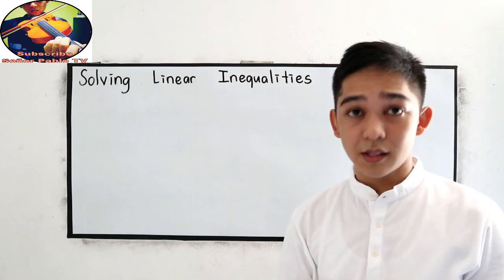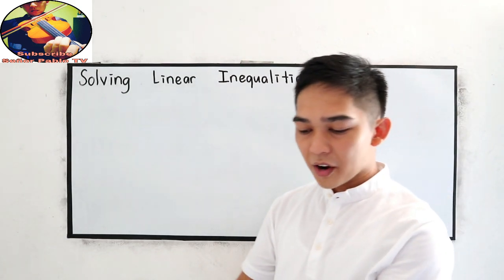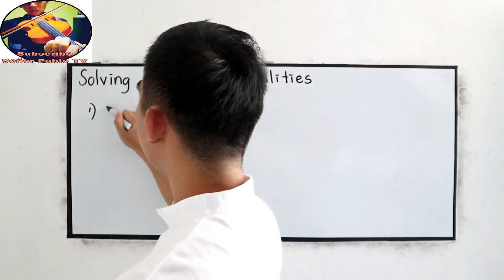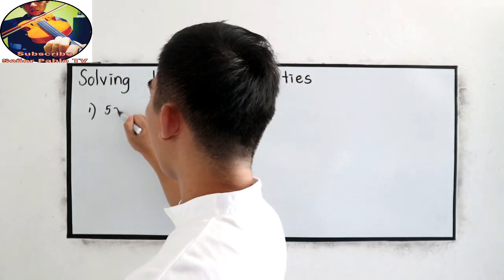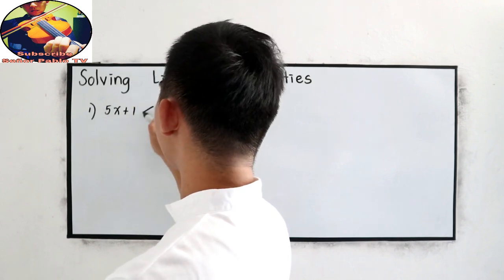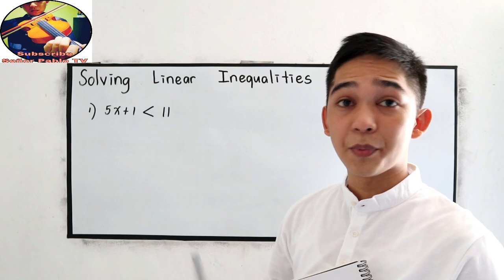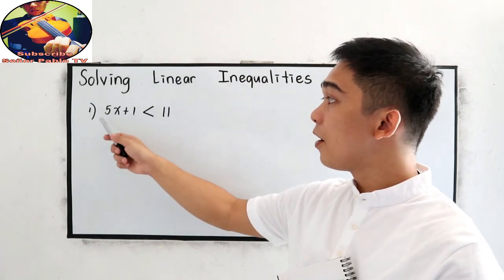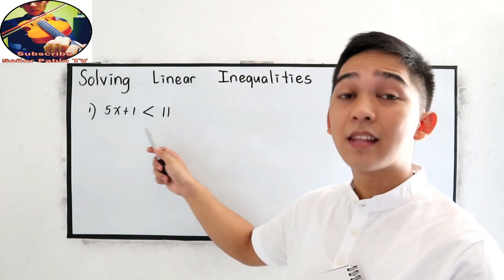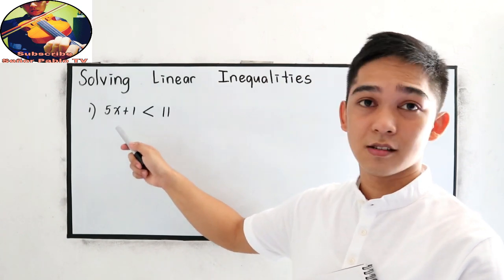Let's try to solve number 1: 5x plus 1 is less than 11. Again, let us repeat the given — 5x plus 1 is less than 11 — and we are going to solve for x.